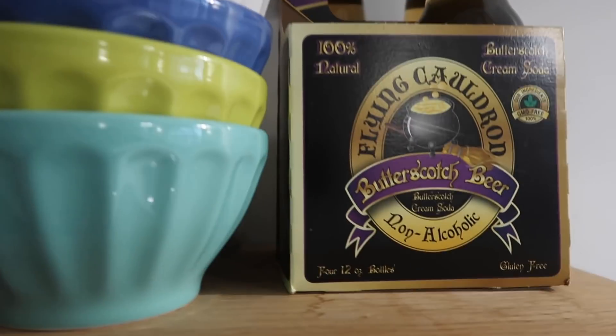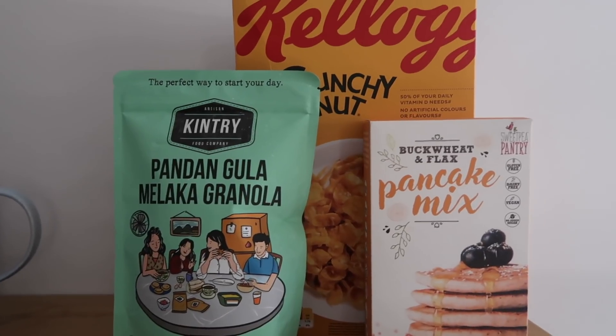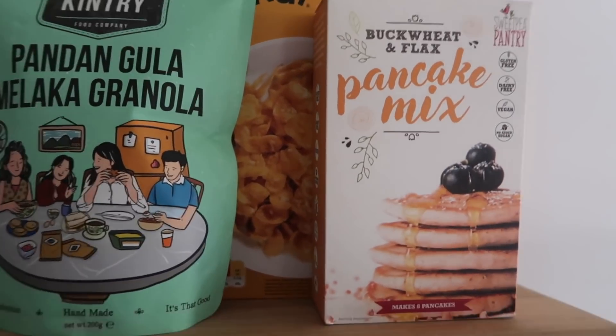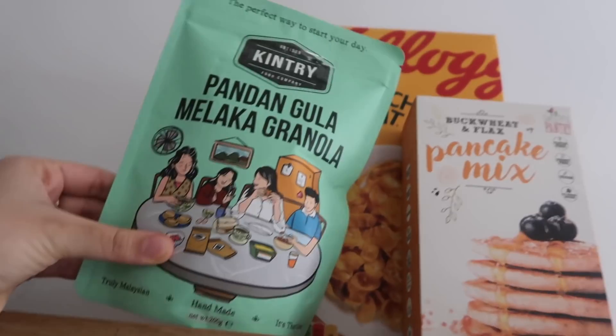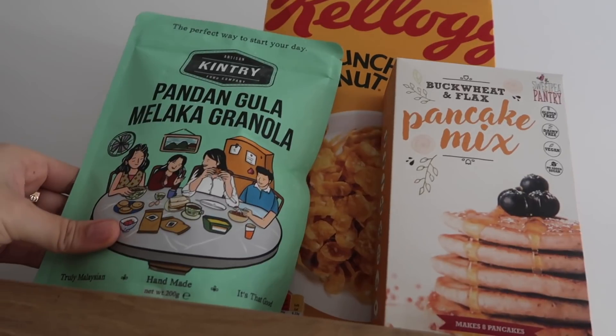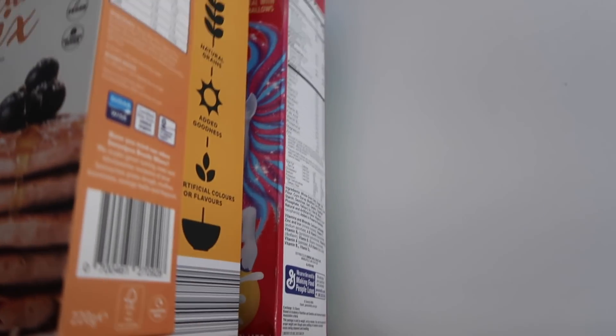And then up here I have some cereal and breakfast stuff, granola. This I think is just so cute, it's like kind of like a nod to Malaysia, pandan gula melaka granola. And then I have this pancake mix and then these two boxes are actually empty, Lucky Charms and Crunchy Nut cereal. I know Lucky Charms pun halal but they're just empty just for decorations.